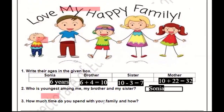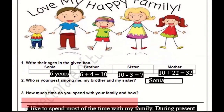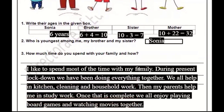The next question is: How much time do you spend with your family and how? I have given a simple answer — try to write it yourself. I like to spend most of my time with my family. During the present lockdown, we have been doing everything together. We all help in the kitchen, cleaning and household work. Then my parents help me in study work. Once that is complete, we all enjoy playing board games and watching movies together.